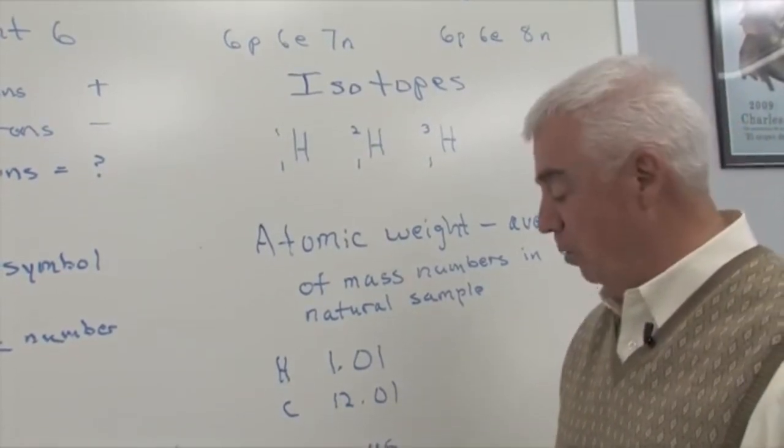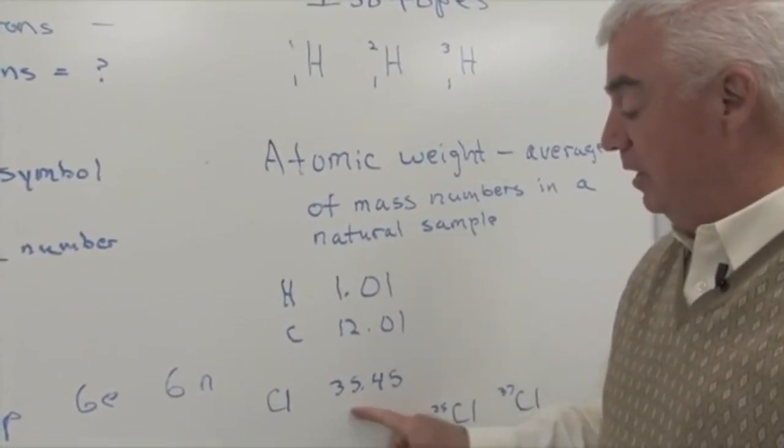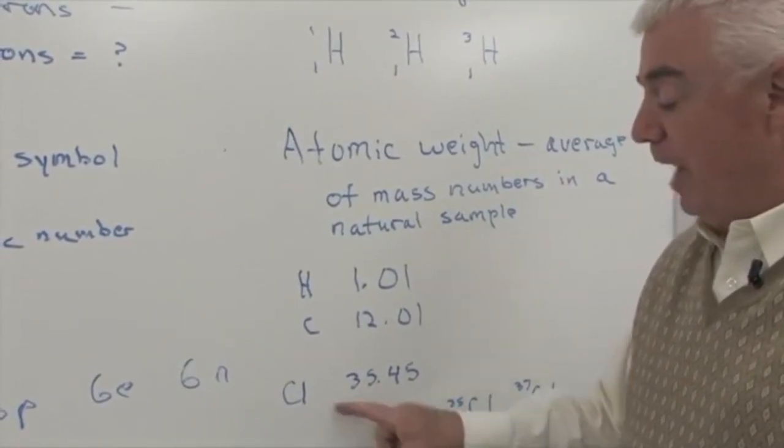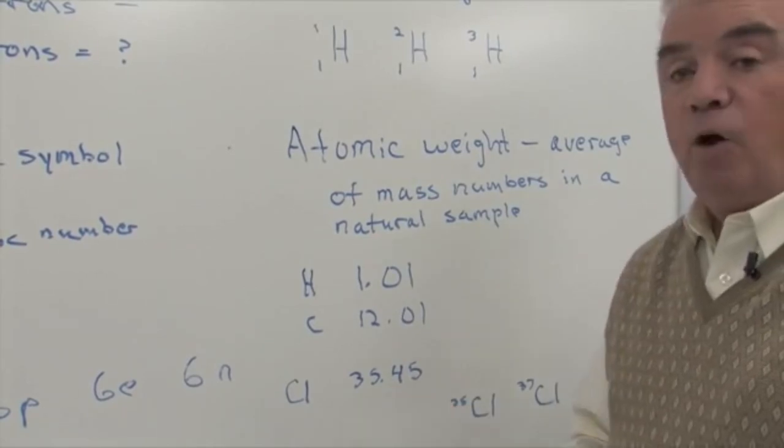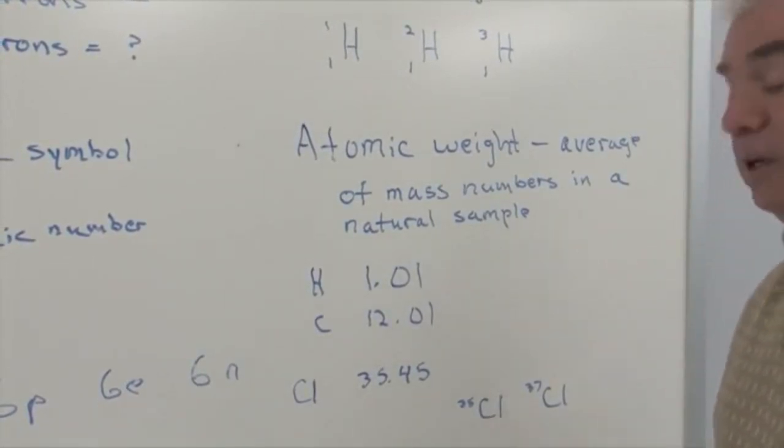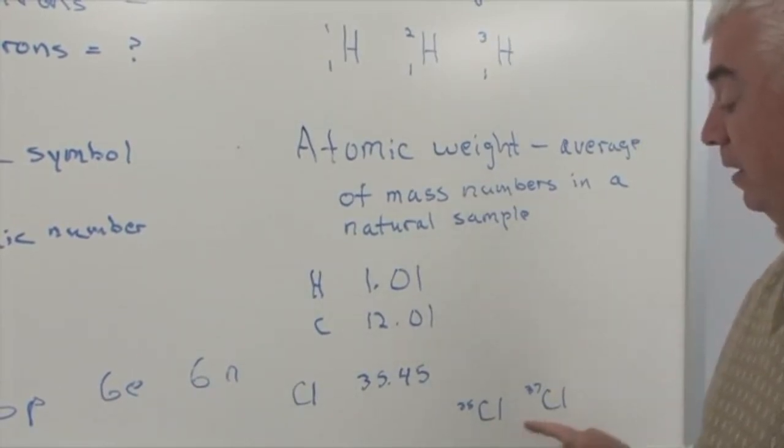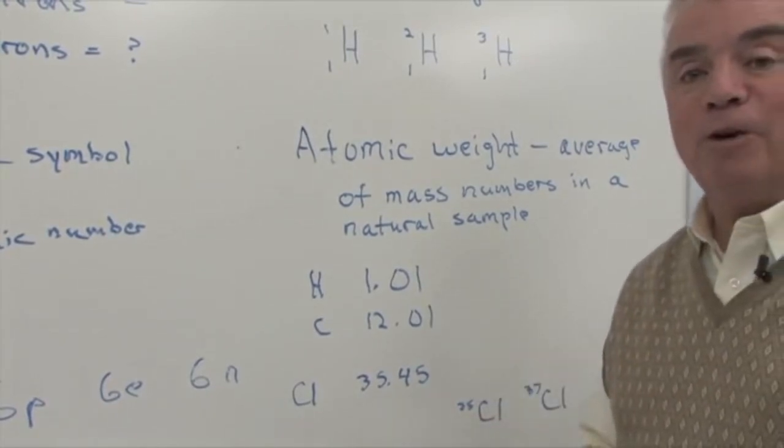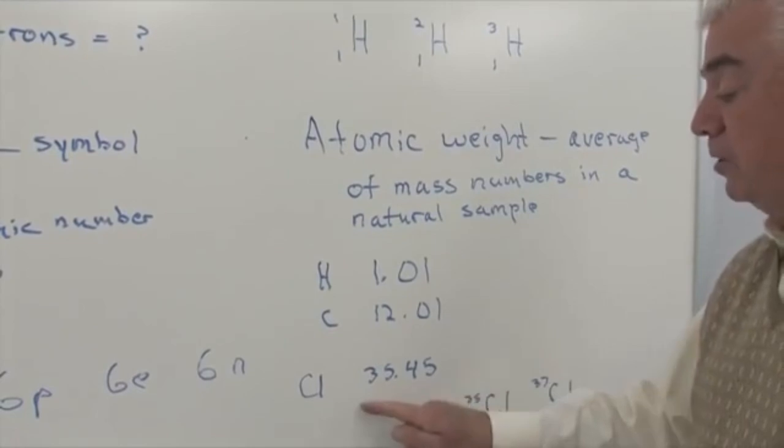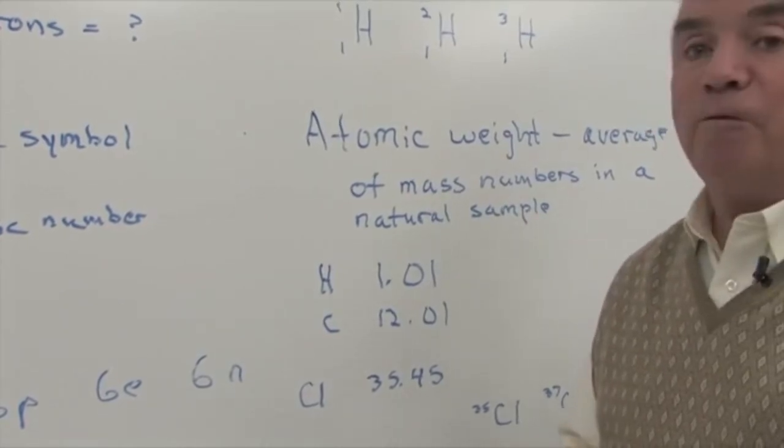Let's look at one more example, chlorine. The atomic weight on the periodic chart of the elements is listed as 35.45. Well, the fact that it's not a whole number tells us that there are probably some isotopes. And we have two isotopes of chlorine, 35 and 37. There must be a lot more of chlorine 35 in nature than chlorine 37. And so the average in the natural sample comes out to be 35.45.